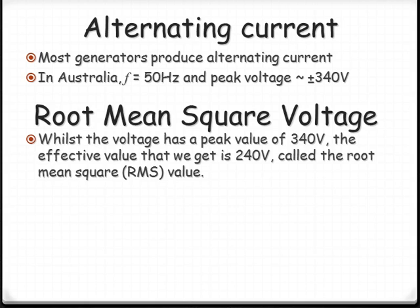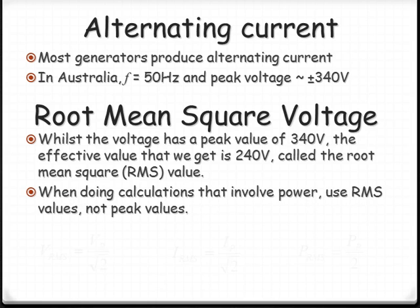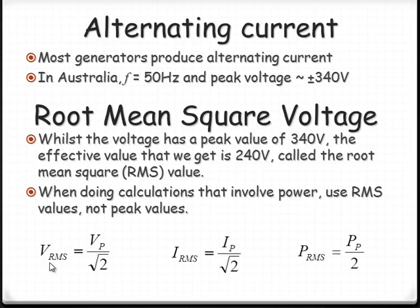In order to do some calculations that move between a peak voltage and an RMS voltage, we've got a few equations. The voltage, basically voltage divided by root 2 from the peak to get the RMS value.